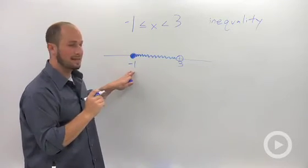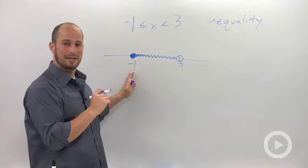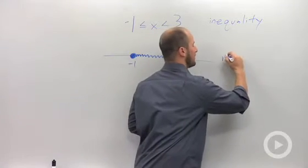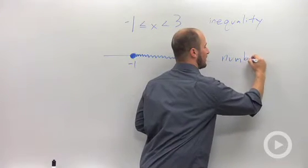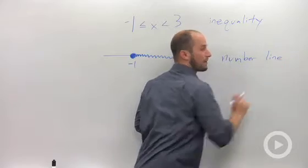Just saying everything between negative 1 and 3, including 1. So whenever you see write your answer on a number line, this is what you are going for.